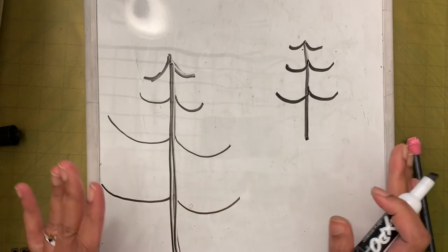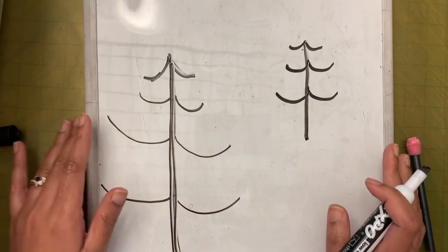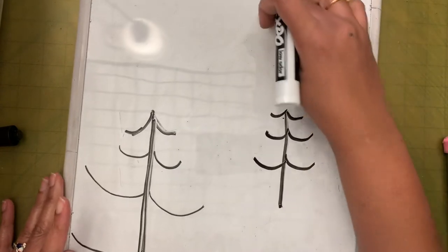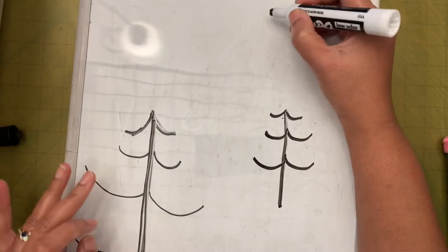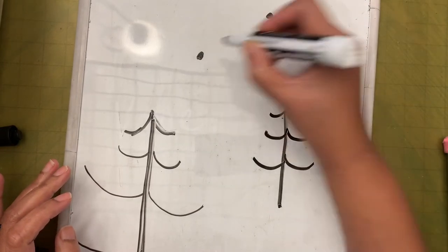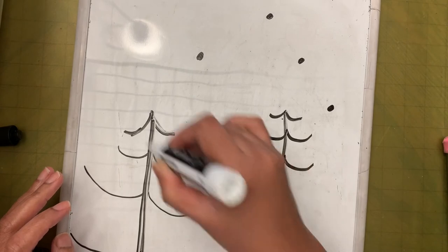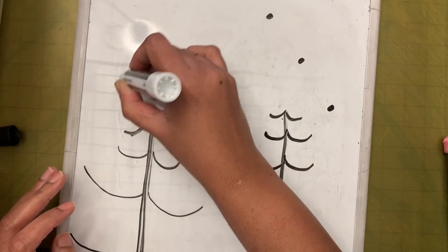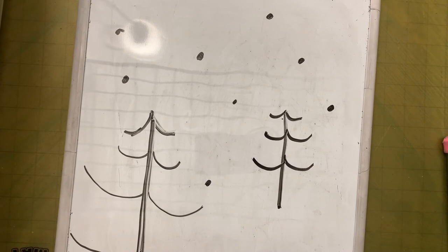So this is all that you need to do for the drawing part. Then with the white crayon, we'll make it look like it's snowing — we'll put dots on the paper like sprinkles. That's all that needs to be done.